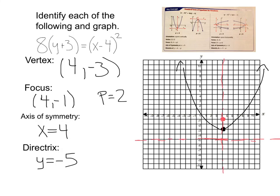And we're done. That one went much quicker. As you get the hang of it, it's really not too difficult. First, find your vertex. Is it opening up, down, left, or right? Find your p value by setting 4p equal to your coefficient — that's going to be the spaces away from your vertex for your focus. Your axis of symmetry cuts the parabola in half, and your directrix is p away from the vertex, opposite of the focus.